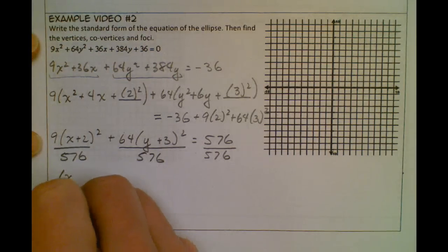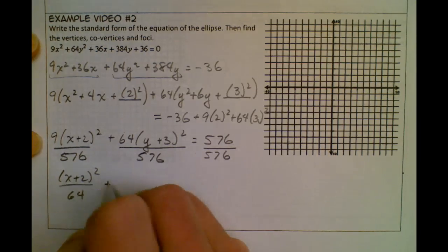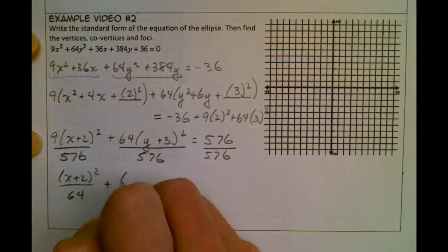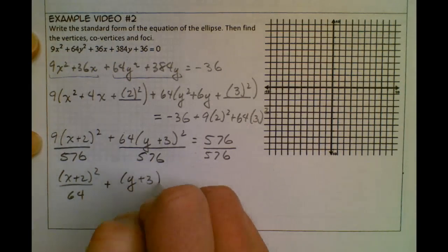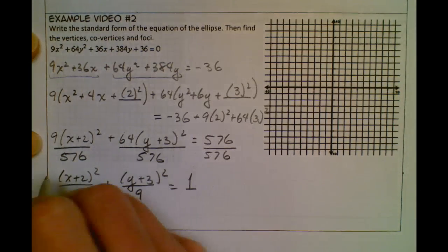So this becomes (x + 2)²/64 plus, and then reduce these two, 64 goes into 576 9 times. So I have (y + 3)²/9, and then it is equal to 1.